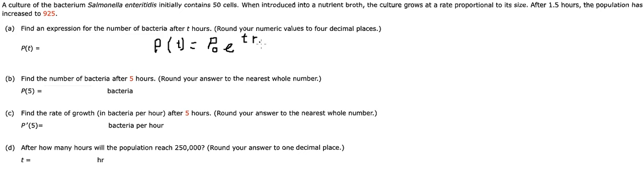The question wants us to set up the equation. We have P0, we have t, and we have P(t), but we don't have r. We need to find r. After 1.5 hours we have 925, so we have P(1.5) = 925.